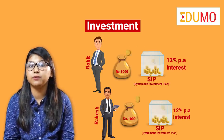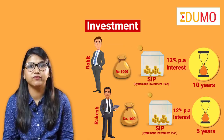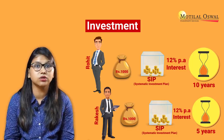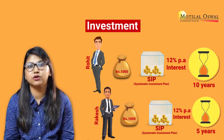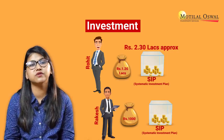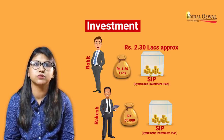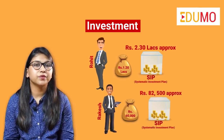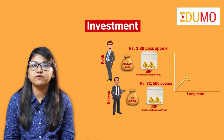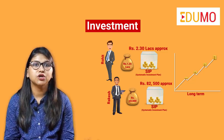While Rohit decided to keep the money invested for 10 years, Rakesh decided to keep it for 5 years. At the end of their respective investment periods, due to the power of compounding in long-term investment, Rohit earned a return of Rs 2.30 lakhs approximately, whereas Rakesh with an investment of Rs 60,000 could earn only Rs 82,500 approximately. So what do we understand here? Investing is a long-term scenario — the longer time you keep your money invested, the higher returns you will derive from that investment.